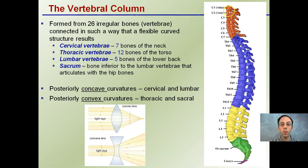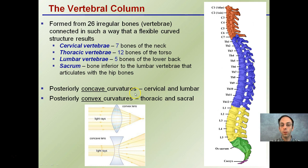The vertebral column is formed by 26 irregular bones called vertebrae, connected in such a way that it's a flexible curved structure. This results in the cervical vertebrae on top, the thoracic vertebrae in the middle, the lumbar vertebrae below that, and then the sacrum. We have posteriorly concave curvatures of the cervical and lumbar regions, and convex curvatures of the thoracic and sacral regions.